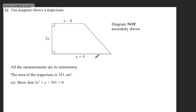The question carries two marks. For the area of the trapezium, we add the top and bottom, divide by 2, and multiply by the perpendicular height. We have the bottom, which is x + 5, plus the top, which is x - 4. We divide by 2 and multiply by the perpendicular height. The perpendicular height is 2x, and this gives us the area. This will equal 351.